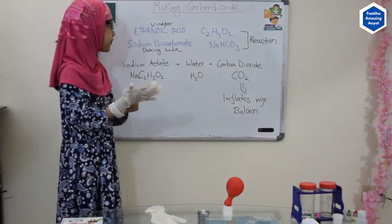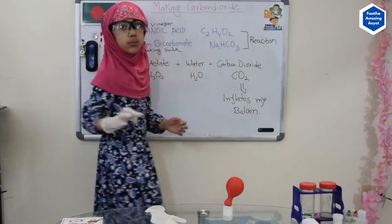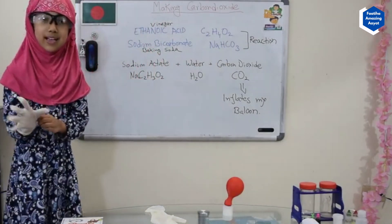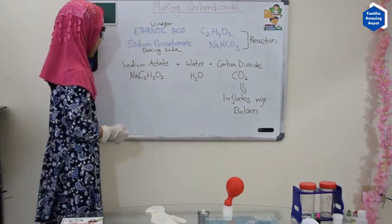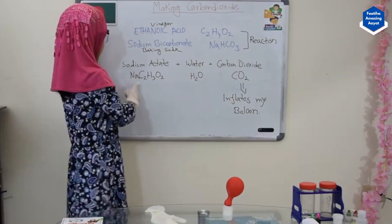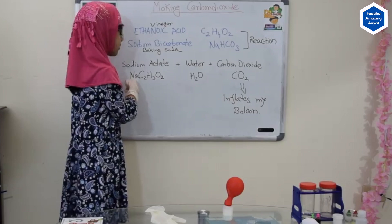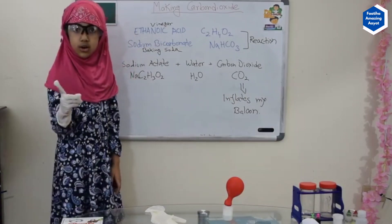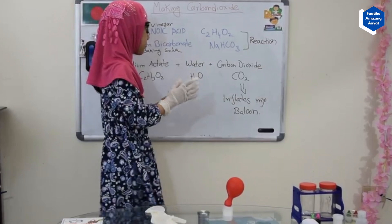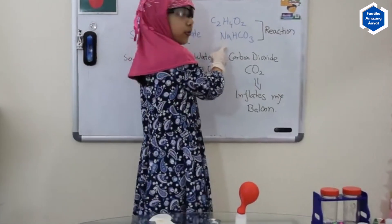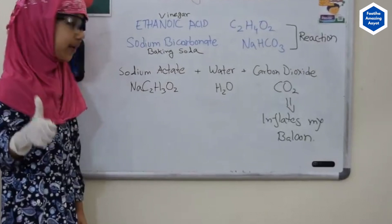These symbols — we're going to have to prove if the equation is correct, with this map. This is sodium. Let's see how many sodiums there are. Here's only one sodium — let's see if it's one sodium here. Look, only one sodium. So that's correct.